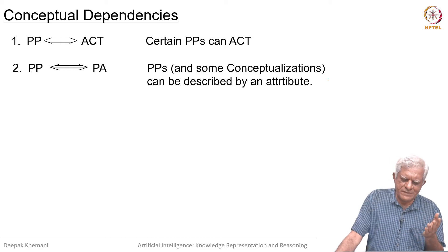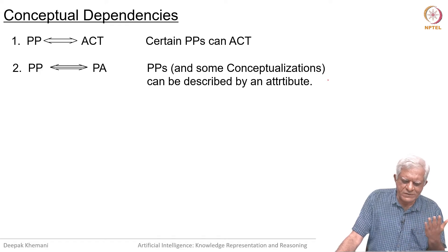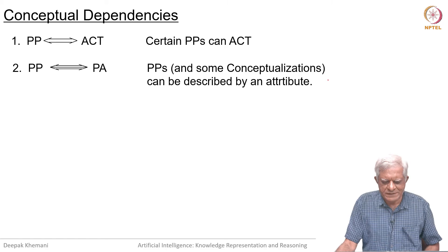We also mentioned that picture producers can have picture attributes. For example, 'the rose is red' — you could express that with something like that.